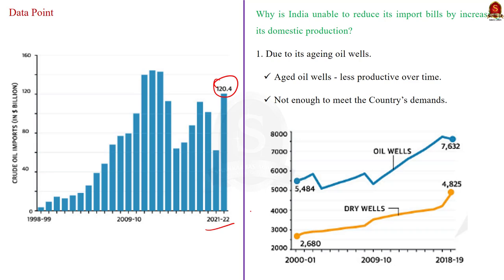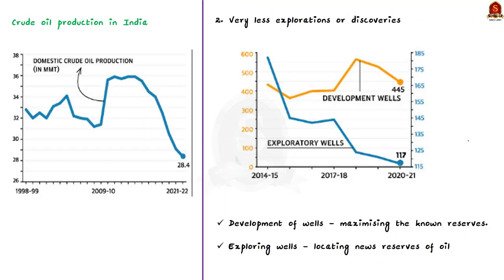Why is India unable to reduce its import bill by increasing domestic production? There are two main reasons. Firstly, it is due to aging oil wells. The number of dry oil wells is increasing due to rising demand. Aged oil wells become less productive over time and new oil wells are not enough to meet the country's demands, causing crude oil production to decline. Secondly, there are fewer explorations or discoveries. Whether it is development of wells — maximizing known reserves — or exploring wells — locating new reserves — both have declined.